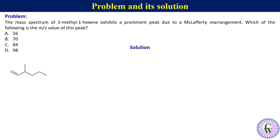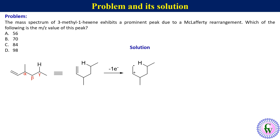This is the structure of 3-methyl-1-hexene. We can see that it has alpha, beta, and gamma carbons with a gamma hydrogen, so it will undergo McLafferty rearrangement. Let's redraw it in the orientation required for McLafferty rearrangement. Electron bombardment will remove one of the two pi electrons to produce the molecular ion, which will then undergo McLafferty rearrangement to produce propene and a radical cation with m/z value of 56. So option A is the correct answer.